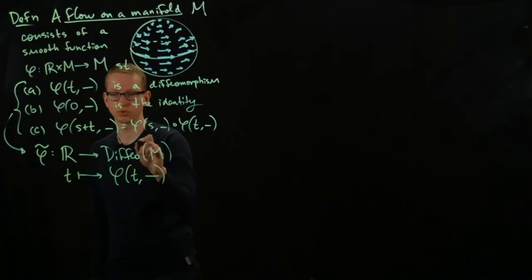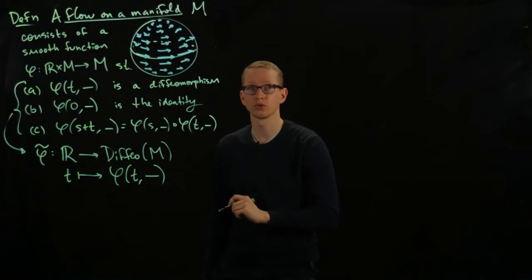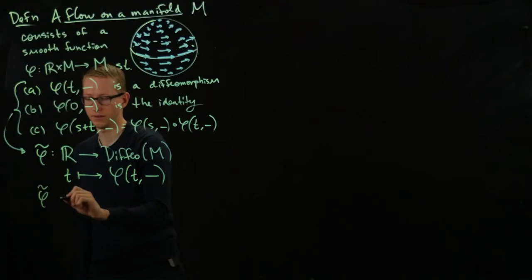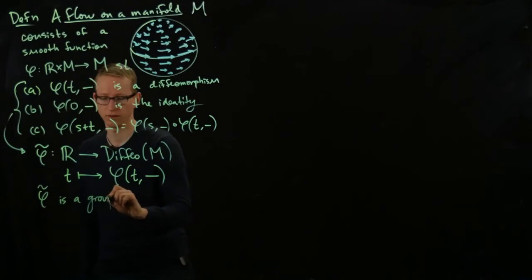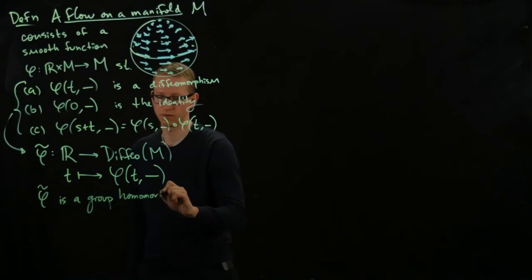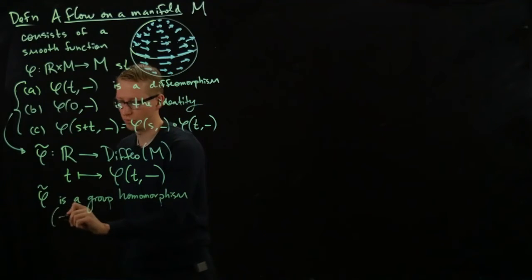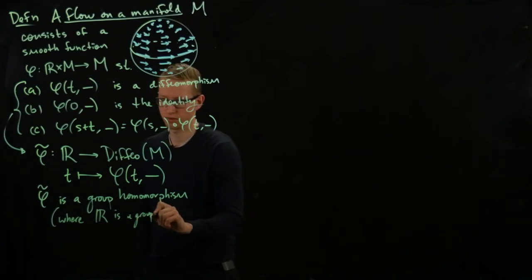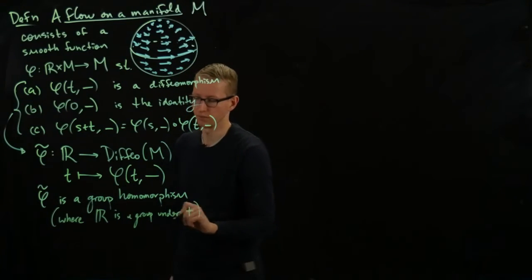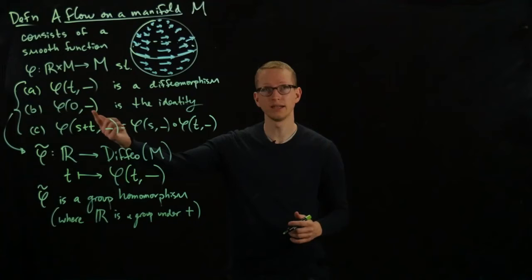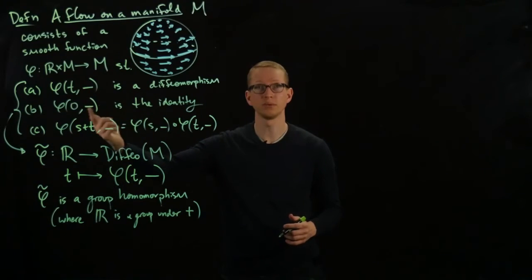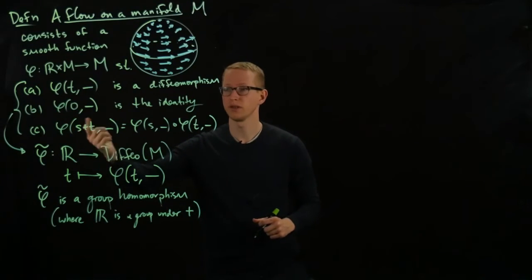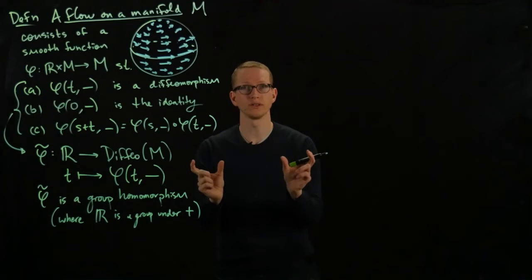And because this is a group, the set of real numbers is also grouped under addition. So I can write that this is where R is a group homomorphism where R is a group under addition. And this just means that the identity goes to the identity. That's what this means because zero is the identity for the addition in R. And when you add two numbers then that goes to the composition of the two diffeomorphisms respectively.